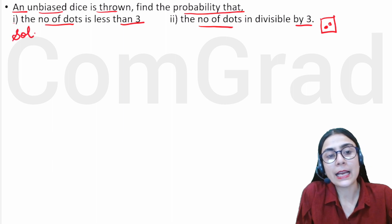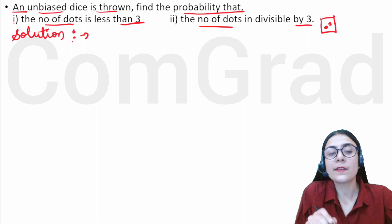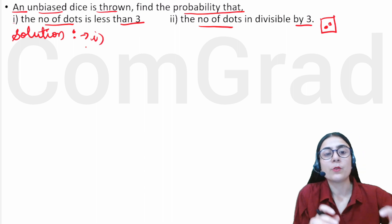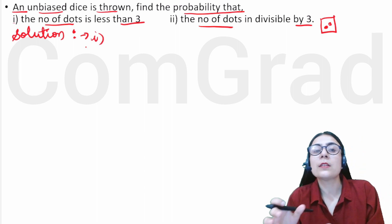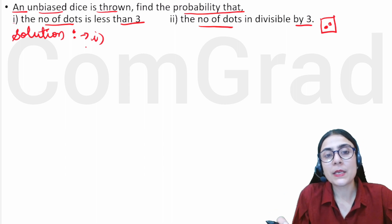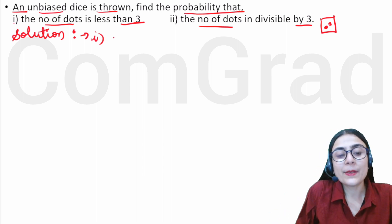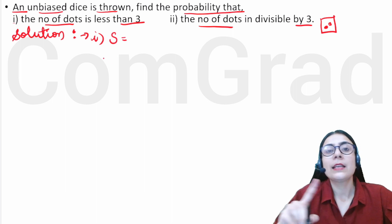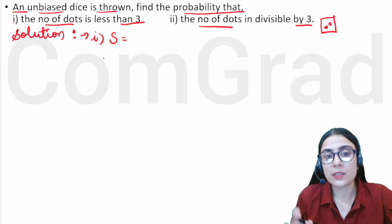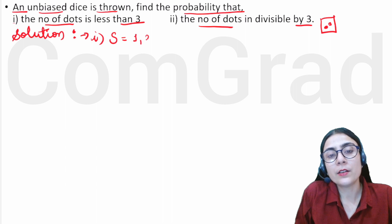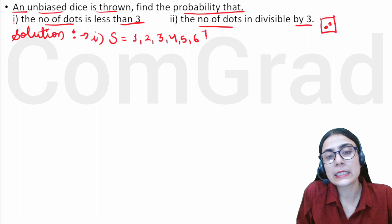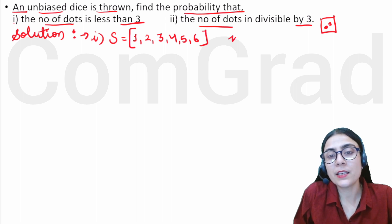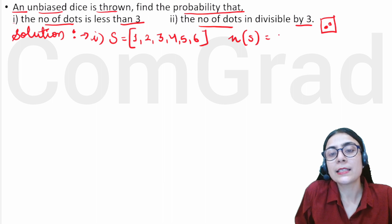Let's start the solution. For the first case — where the number of dots should be less than 3 — we take the sample space. If you have seen a dice, the dots go from 1 to 6, so the sample space is {1, 2, 3, 4, 5, 6}. The number of sample space elements is 6.